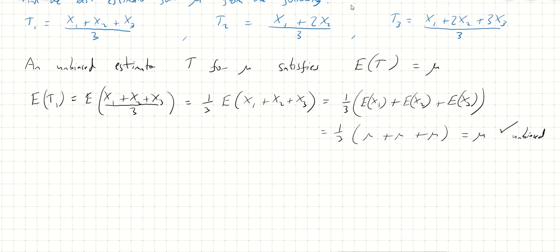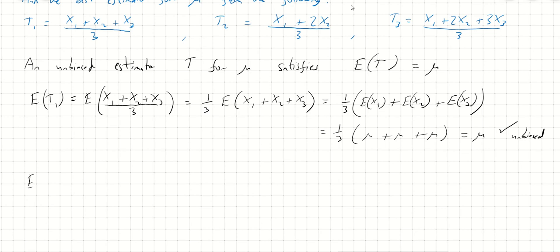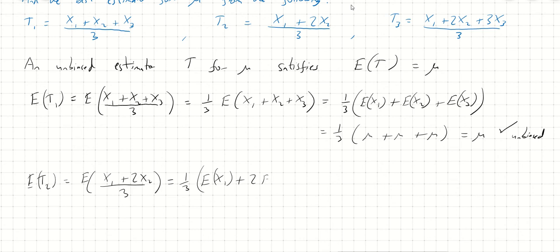Let's do the same thing with T2 — we can do this a bit quicker. E[T2] is E[x1 plus 2x2 over 3], which is one third times (E[x1] plus 2E[x2]), which is one third times (mu plus 2mu), which is again equal to mu. So T2 is also unbiased.